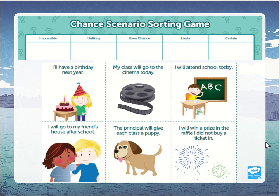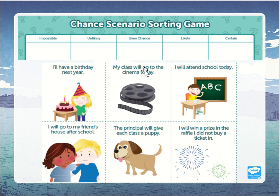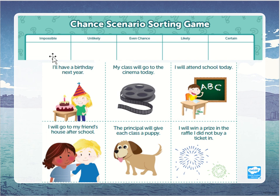The next activity is to sort these scenarios under impossible, unlikely, even chance, likely, or certain. What is the chance you'll have a birthday next year? What is the chance your class will go to the cinema today? That you will attend school today? That you'll go to your friend's house after school? That the principal will give each class a puppy? Or that you'll win a prize in a raffle you didn't even buy a ticket in? See if you can sort these into impossible, unlikely, even chance, likely, and certain.